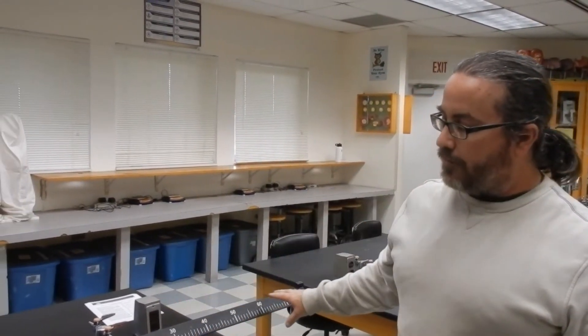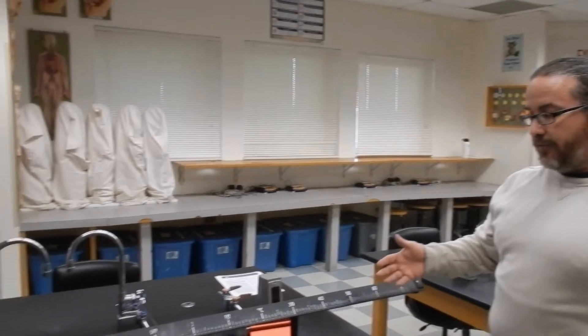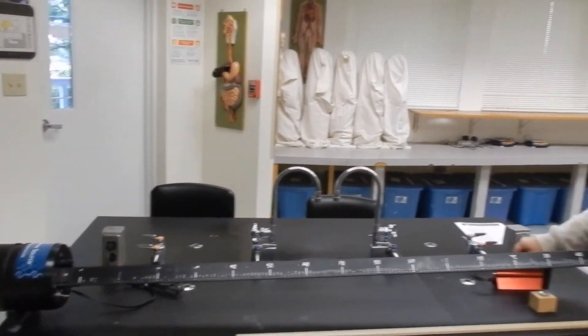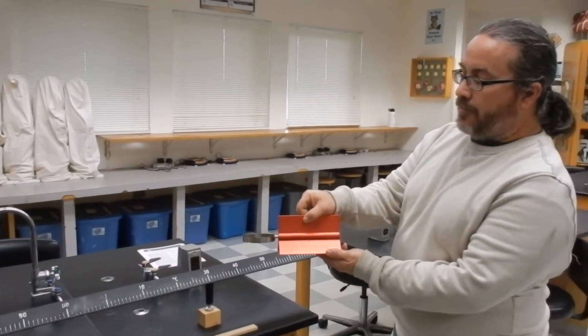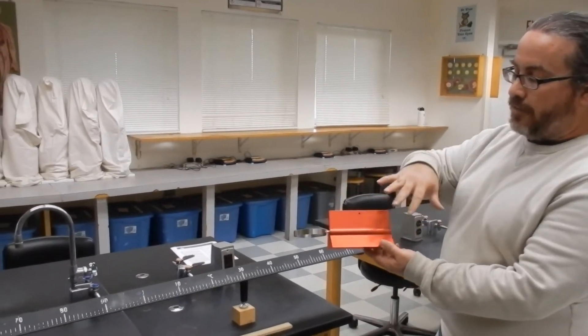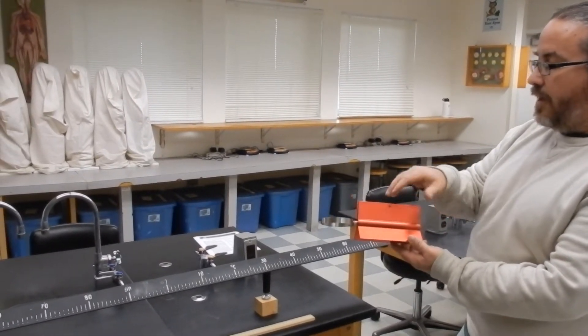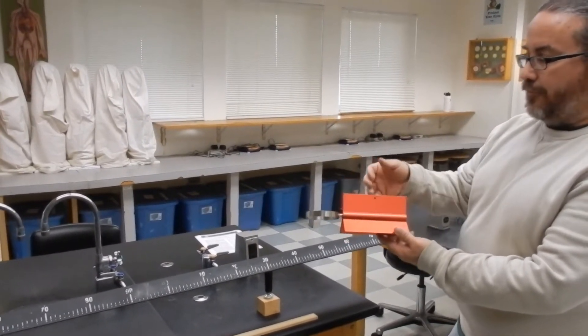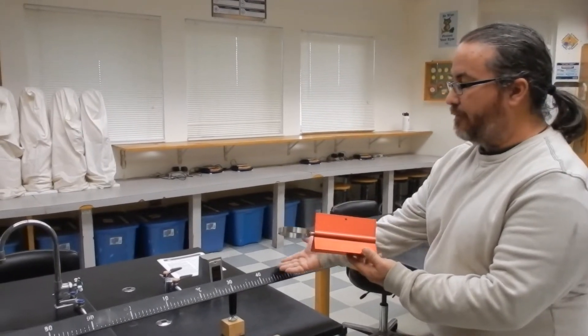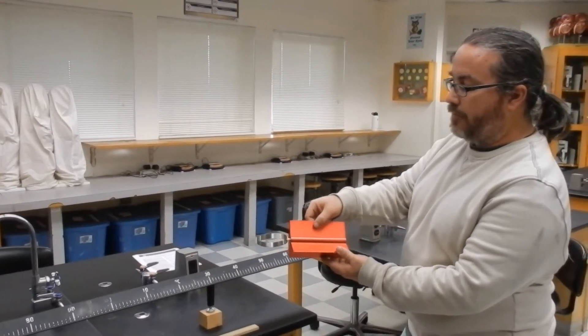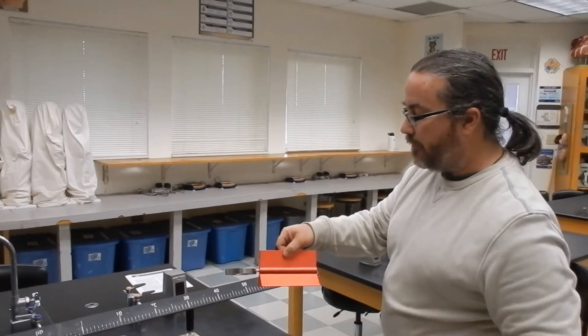So this is the inelastic collisions lab. The air track here will provide a frictionless surface for the glider. Use the long gliders as opposed to the short gliders. The long gliders work better for some reason. It's possible that the short gliders don't get enough lift from the air coming out of the air track, so make sure you use the long gliders.